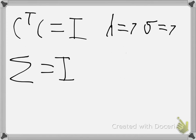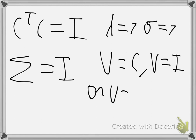You can choose your matrix U to be equal to your matrix C and your matrix V to be equal to the identity matrix, or you can choose U to be the identity matrix and V equal to C transpose. That will be your singular value decomposition. One of U or V has to be the identity matrix and the other one is your original matrix or its transpose.